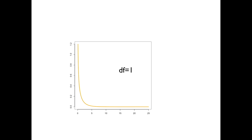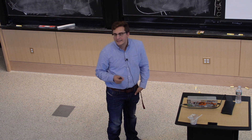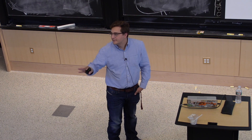The chi-square with one degree of freedom is just the distribution of the square of a standard Gaussian. As degrees of freedom increase — 2, 3, 4, 5, 6, 10 — the distribution becomes flatter and pushes to the right, because we're summing more and more squares. In expectation we get 1 each time, so the mass keeps moving toward infinity. A chi-square distribution with n degrees of freedom goes to infinity as n goes to infinity.